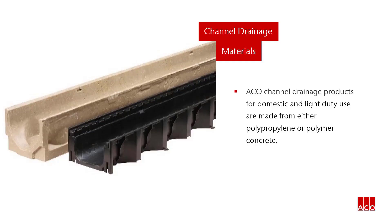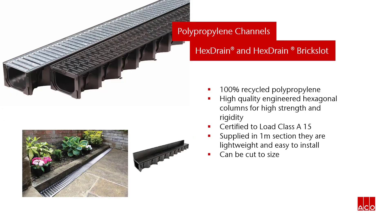Let's look at materials. ACCO channel drainage products for domestic and light duty use are manufactured from either polypropylene or polymer concrete. ACCO Hextrain and Hextrain Brickstart are both made from 100% recycled polypropylene. The high quality engineered hexagonal columns give strength and rigidity. Both products are certified to load class A15 for use in domestic applications. Supplied in one metre sections, they are lightweight and easy to install and can be cut to size.